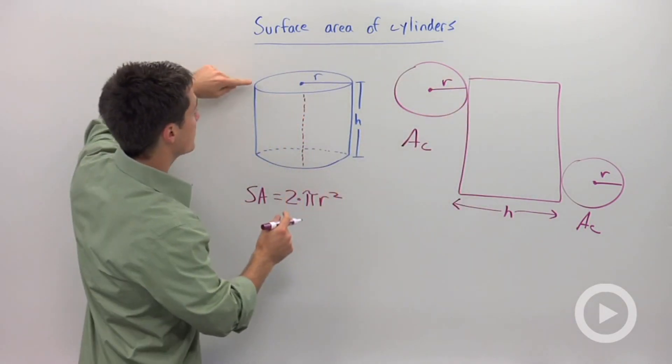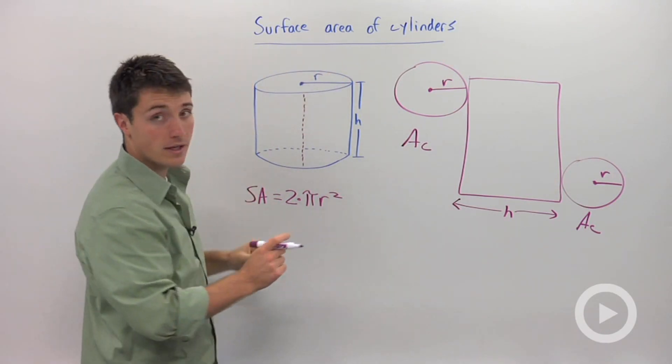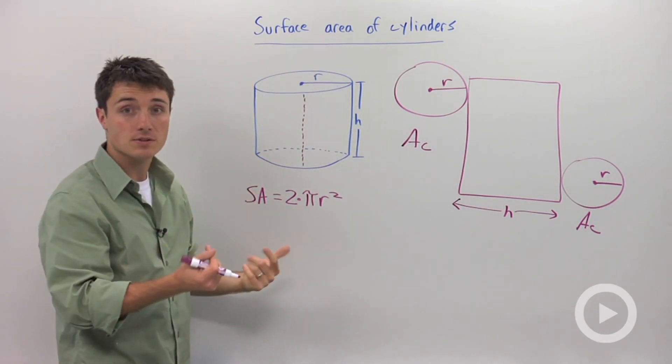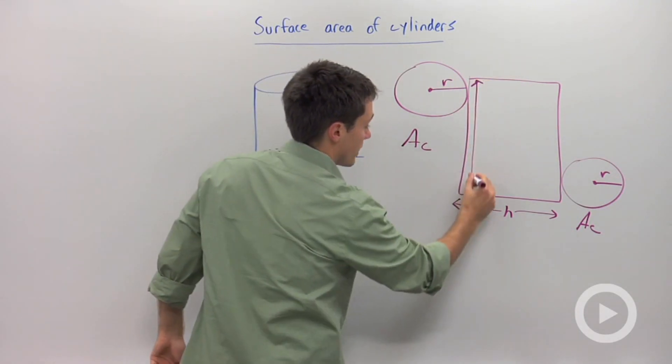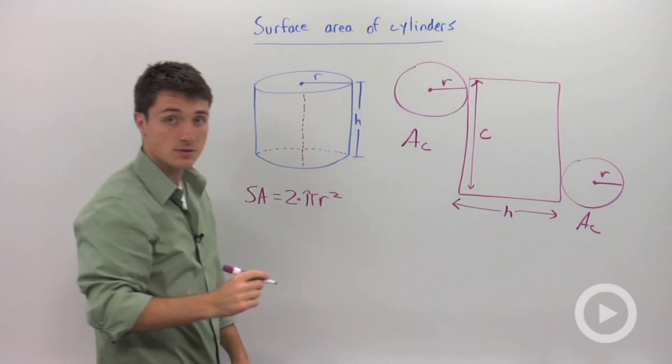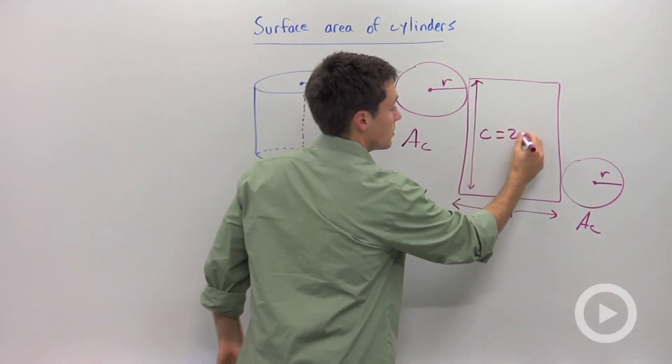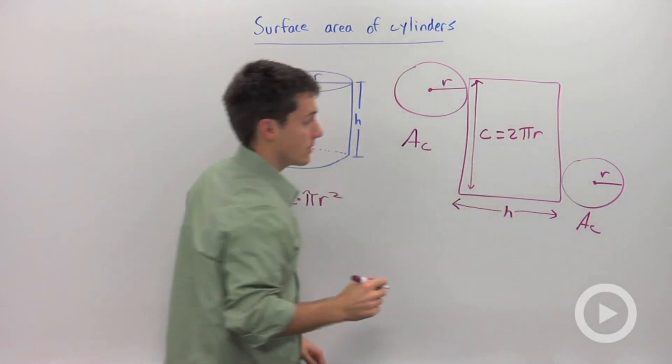Now what is this other distance? Well that other distance is the distance that you would walk around that circle, which is also known as the circumference. So this dimension right here is your circumference, which is equal to 2 times π times r.